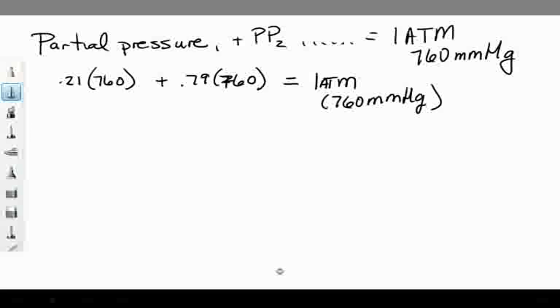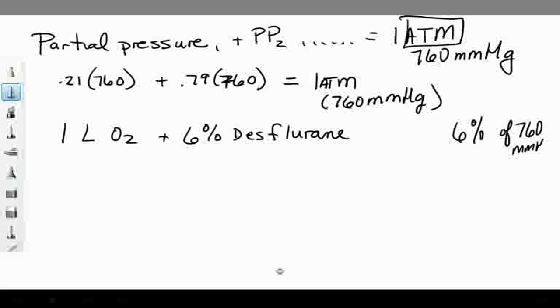Now, think about the flows you give. For example, if you're giving one liter of oxygen in the OR, and you're adding 6% desflurane. What does that 6% desflurane mean? Well, that is 6% of your atmospheric pressure. And since we're at sea level, it's 6% of 760 millimeters of mercury. So what is that? Well, that ends up being 45 millimeters of mercury pressure.